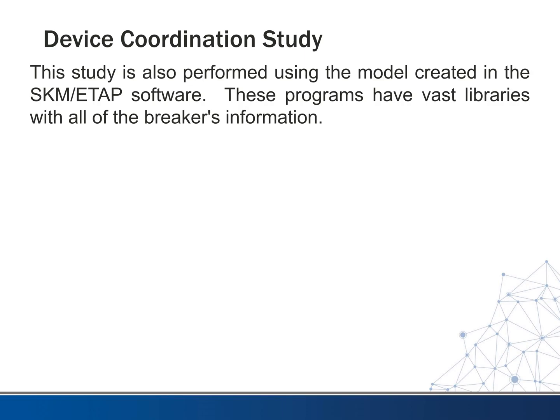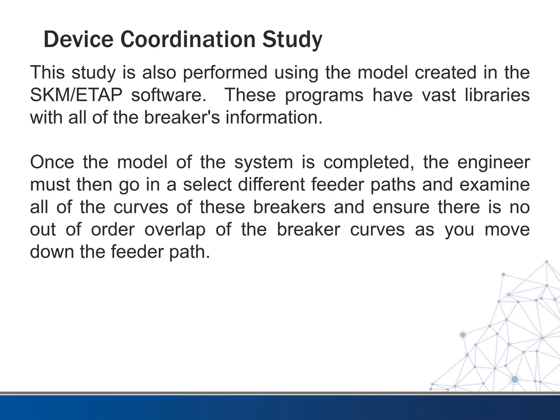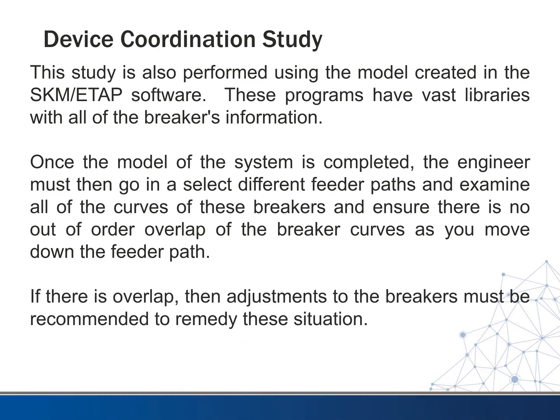This study is also performed using the model created in SKM or ETAP software. These programs have large libraries with all of the breakers, buses, and wire information. Once the model of the system is completed, the engineer must go in and select different feeder paths throughout the system and examine all the curves of the breakers in each path to ensure there's no out-of-order overlap — you don't want your main breaker tripping before a breaker down the line would. If there is overlap, the engineer works to make adjustments to the breaker settings to ensure the right breaker trips first.